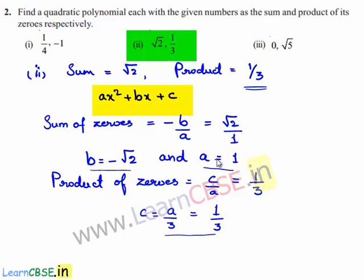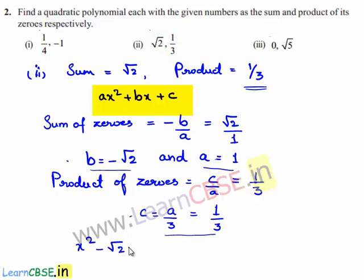Substituting the values of a, b, and c in the polynomial ax² + bx + c, we get x² - √2·x + 1/3. So the required polynomial is x² - √2x + 1/3.